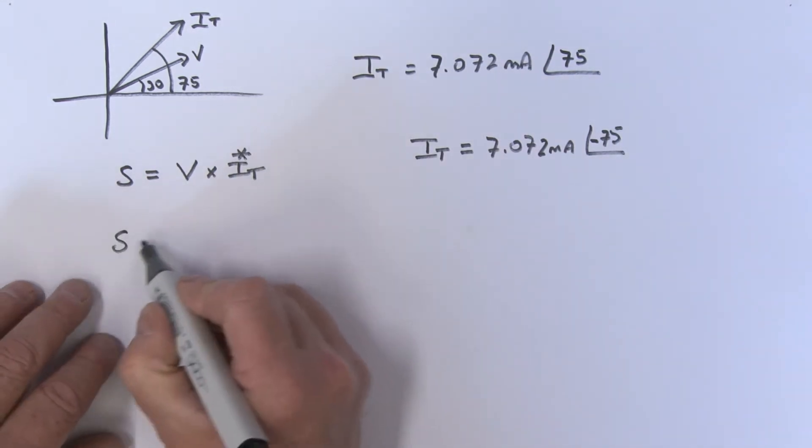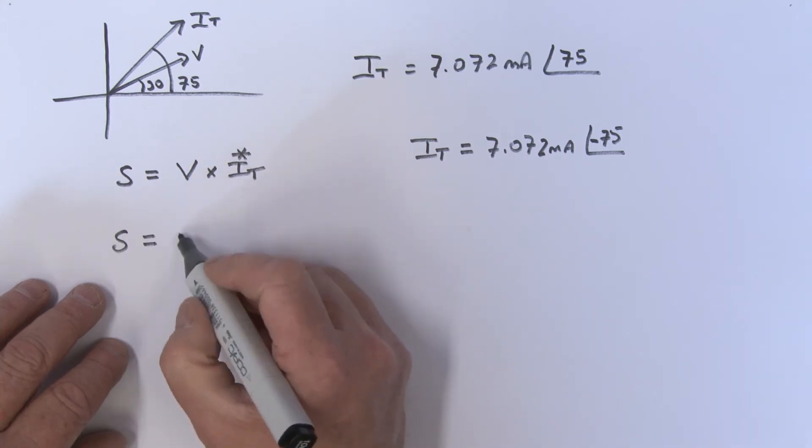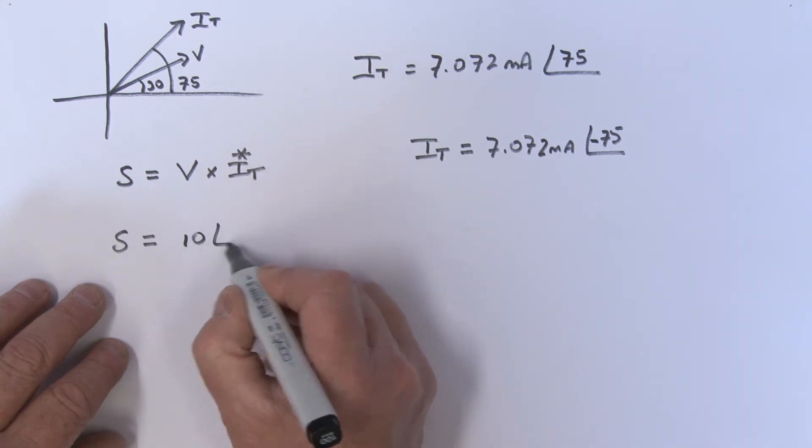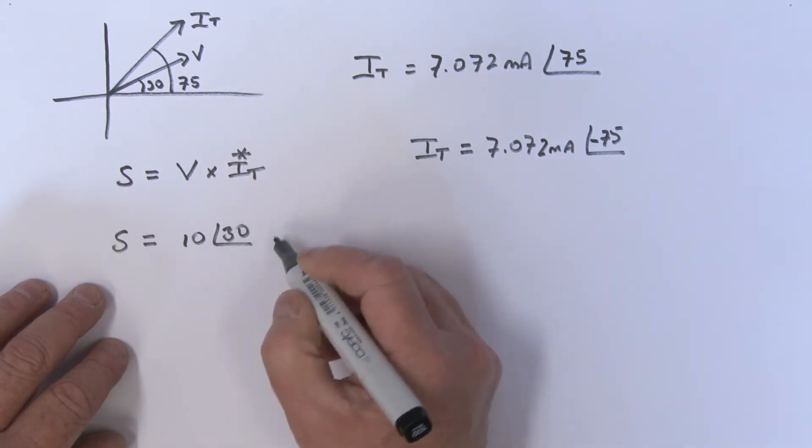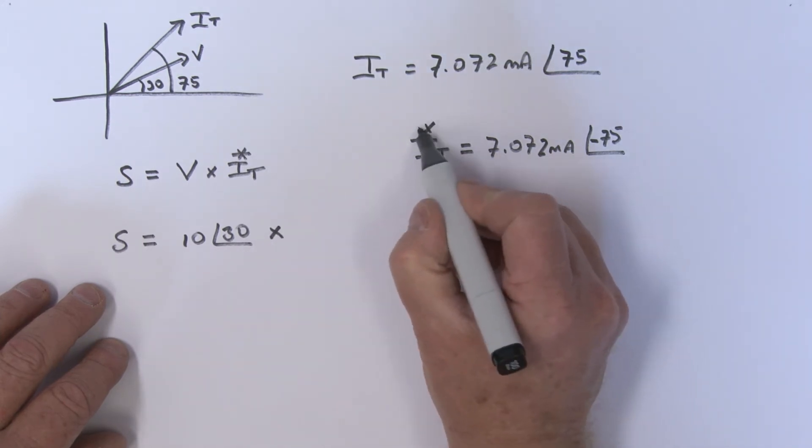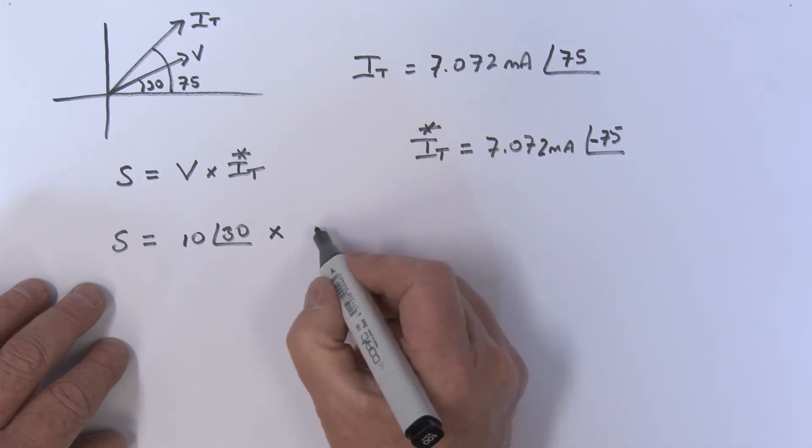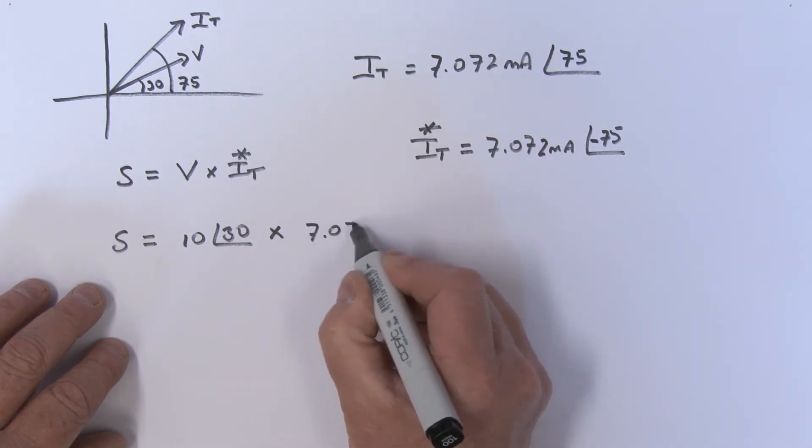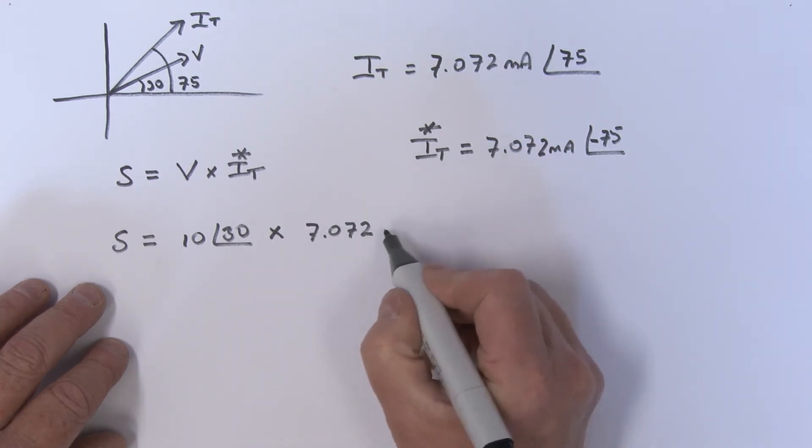So let's do this. That apparent power is equal to V - what was V? That was 10 at an angle of 30, and that's multiplied by this complex conjugate of IT, which is 7.072 milliamps at an angle of minus 75.